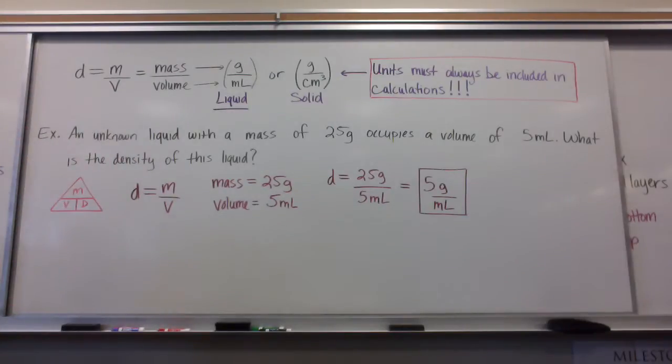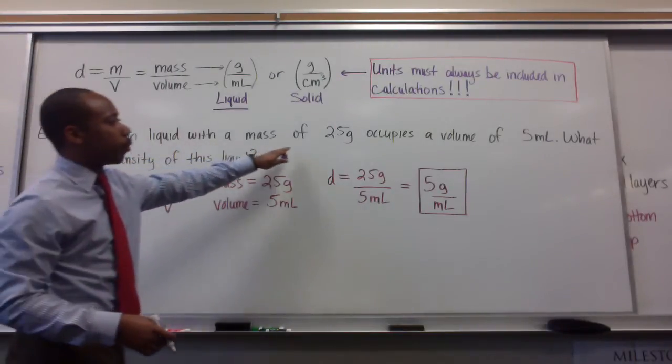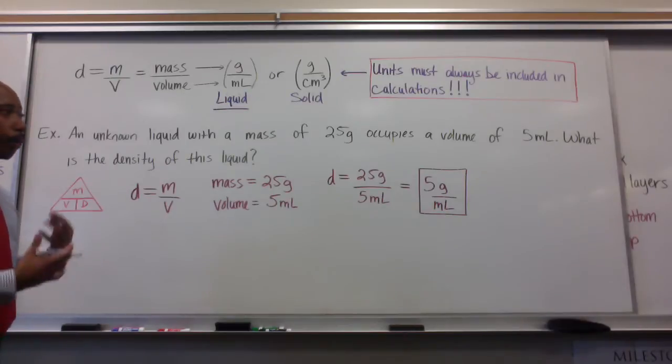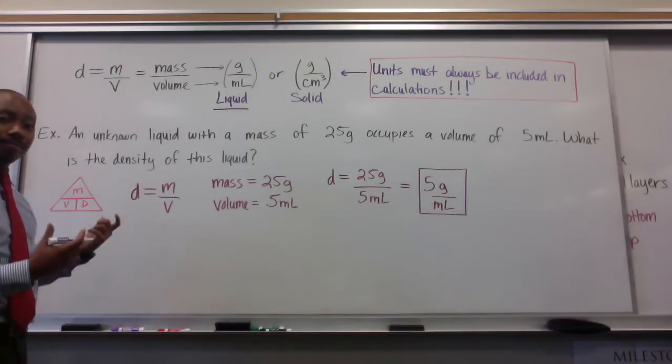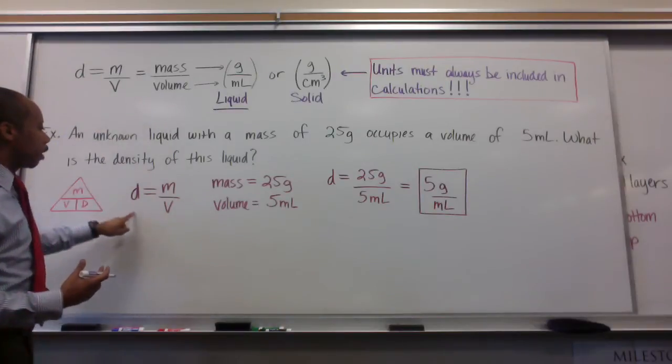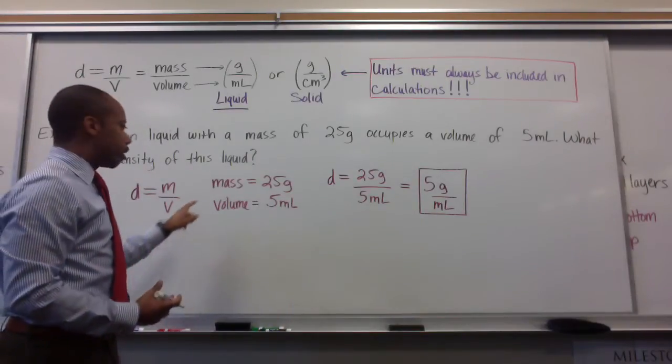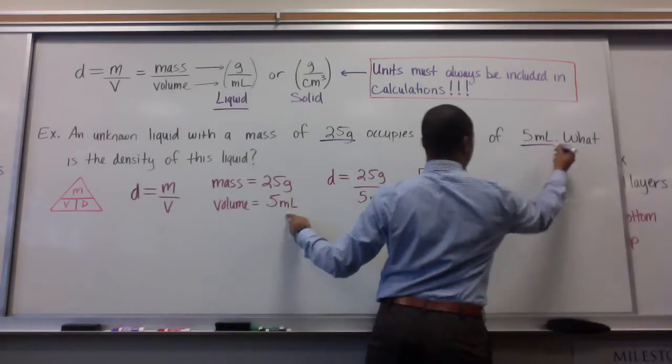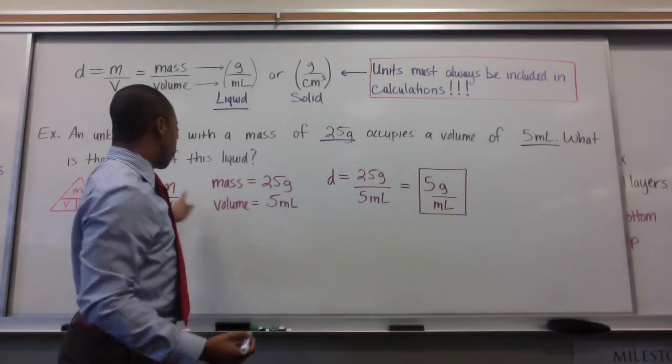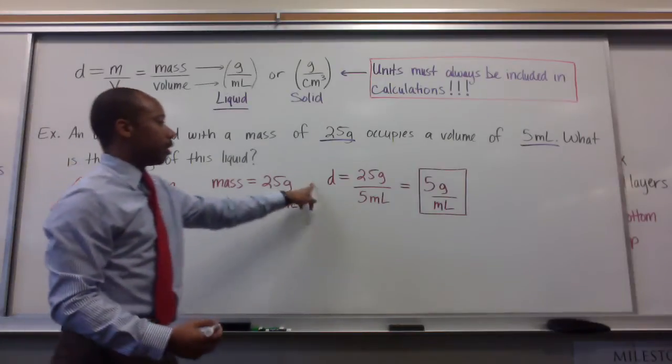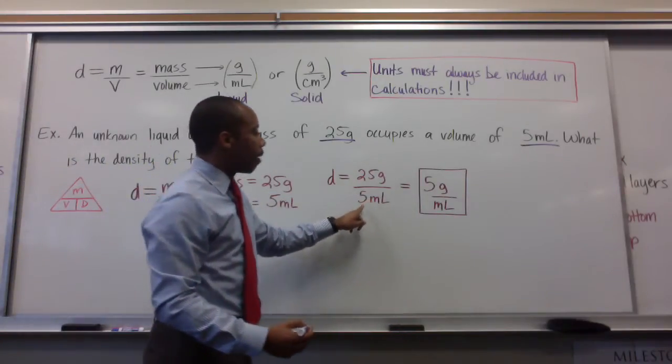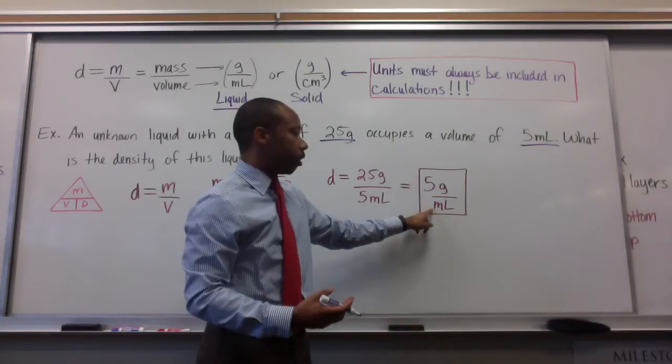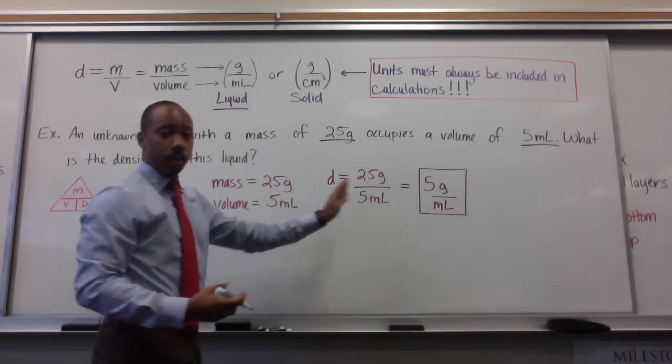An example of a density problem. An unknown liquid with a mass of 25 grams occupies a volume of 5 milliliters. What is the density of this liquid? The first thing we do is decide what equation we're going to use. Lo and behold, density equals mass over volume. We state our variables. Mass is equal to 25 grams, volume is equal to 5 milliliters. We can substitute these values in. Density equals 25 grams divided by 5 milliliters. 25 divided by 5 gives me 5, but I carry my units with me, so it's 5 grams per milliliter. If you do not have your units in all of these steps, it is not correct.